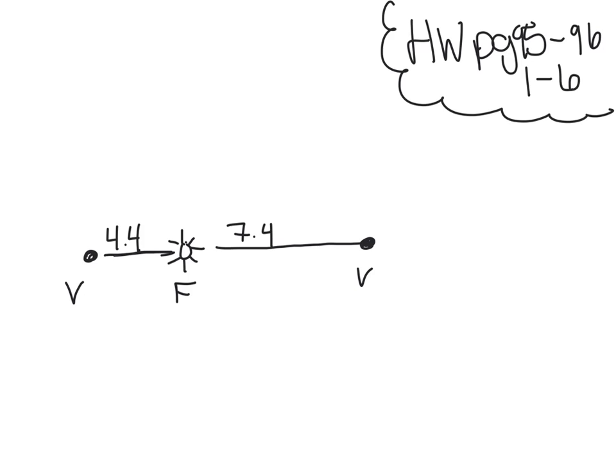It says, find the length of the major axis. If I want to find the length of the major axis, that's this length right here from vertice to vertice. Major axis. We're just going to add these together, so we're going to get 11.8 billion kilometers is the length of my major axis.